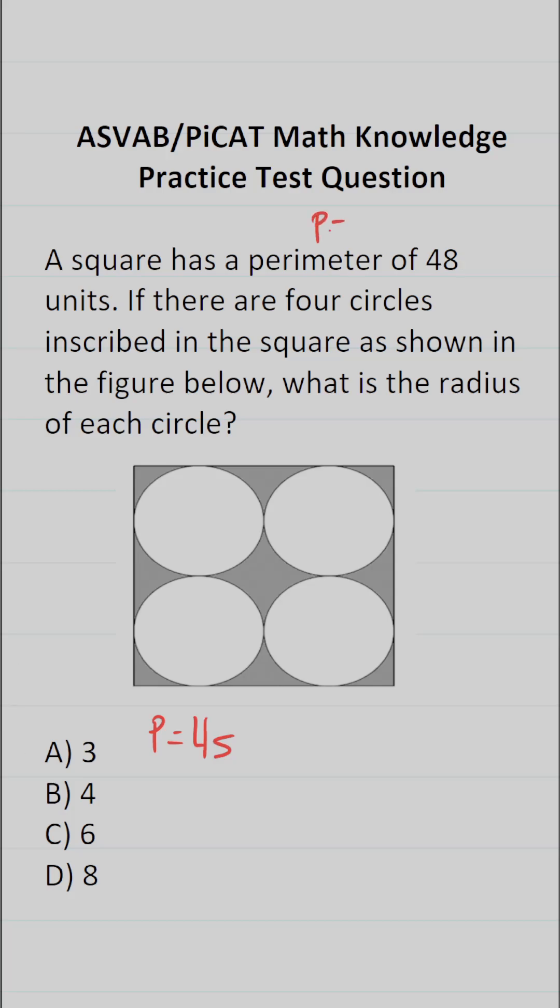In this case, we know the perimeter of the square is 48, so I can replace P here with 48. This says 48 equals 4S. To get S, the side length of the square by itself, we're going to divide both sides of this equation by 4. This says S equals 12.